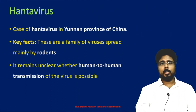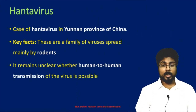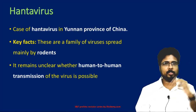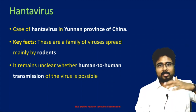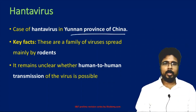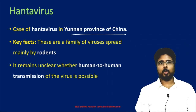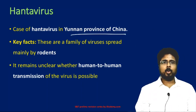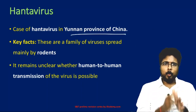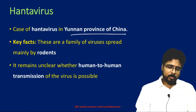Next is Hantavirus. Recently, after coronavirus, Hantavirus was also in news. This is not a new virus — it's an old virus. It was found in the Yunnan province of China. This disease spreads from rodents like rats.